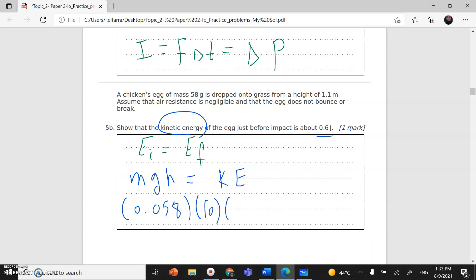Let's calculate: mass of the egg is 0.058 kilograms times gravity 9.8 or 10 times the height 1.1. This gives me the kinetic energy. If I calculate this number, the kinetic energy will be 0.638 joules, which is 0.6 joules. Next video insha'Allah, we'll solve question B.